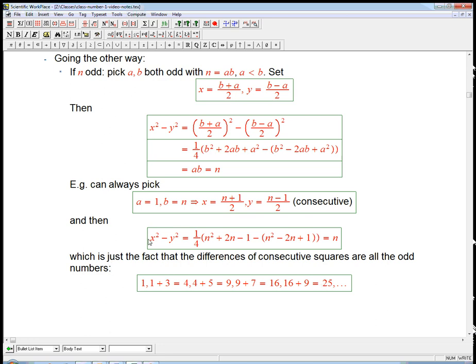So, we're just saying that any odd number, you can create as a difference of squares. In fact, difference of consecutive squares, if you like.